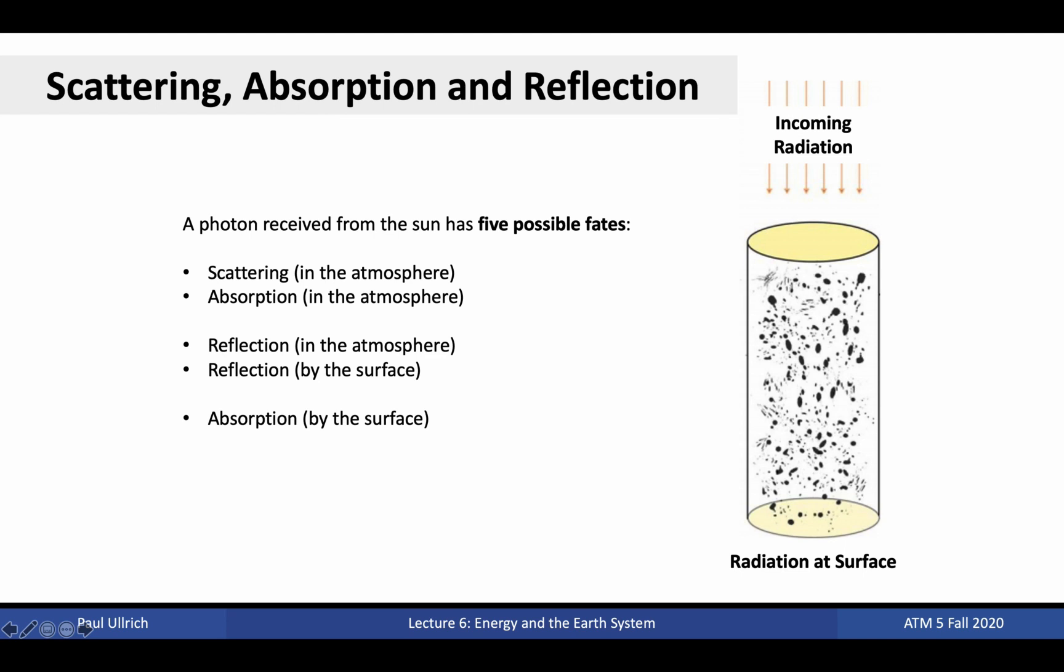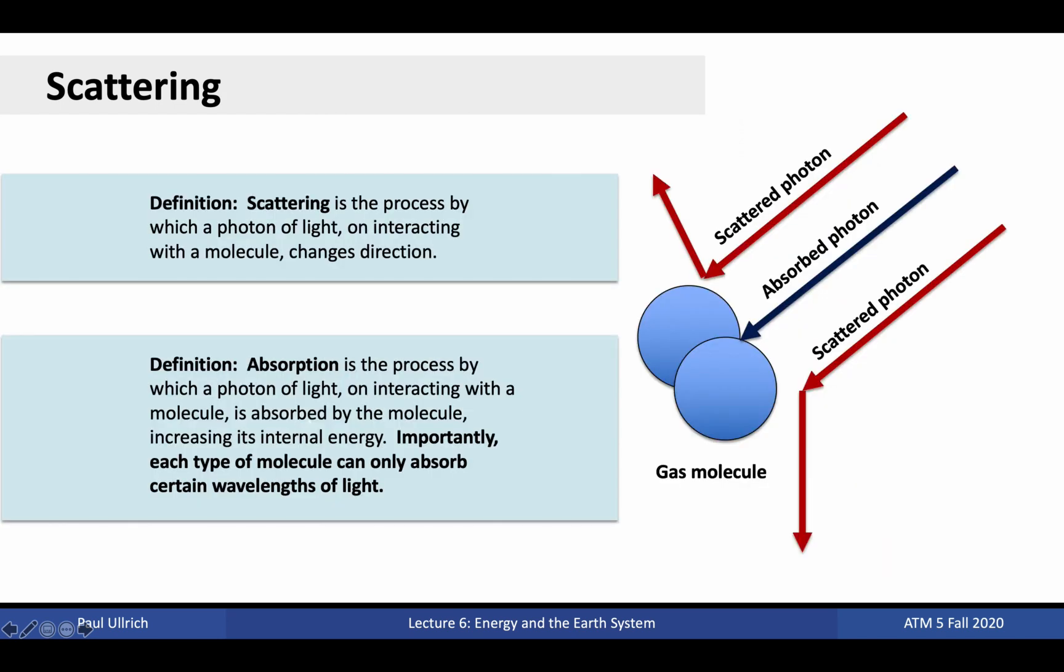Absorption and reflection are pretty straightforward, the former causing the surface to warm up and the latter causing the photon to be sent back harmlessly. Scattering refers to the process by which an incoming photon bounces off a molecule and gets sent off in another direction. Absorption, on the other hand, refers to the process by which a photon gets absorbed by a molecule after a collision, driving up the energy of that molecule.